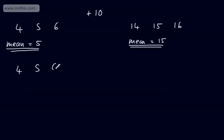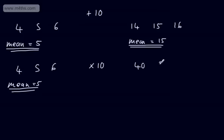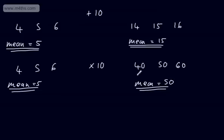Let's take the numbers again: 4, 5, 6. We know that the mean is going to be 5. This time, I'm going to multiply each of these values by 10, giving us 40, 50 and 60. The mean of these three numbers quite clearly is going to be 50. So when I've multiplied each by 10, the mean has also multiplied by 10. In general, we can say if we multiply these by a scale factor of A, the mean also increases by a scale factor of A.